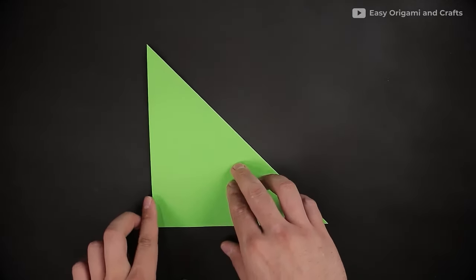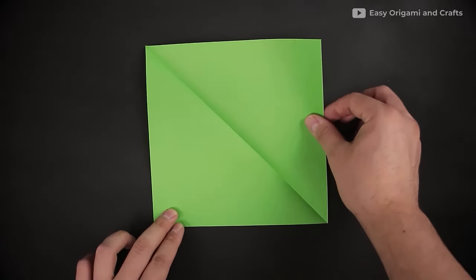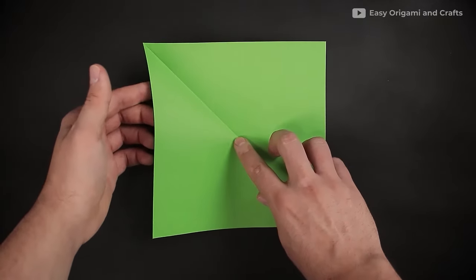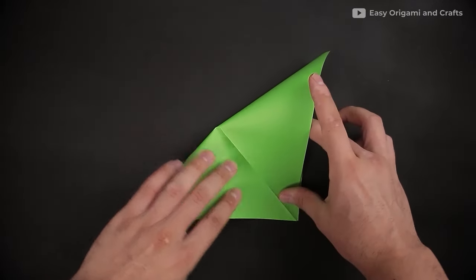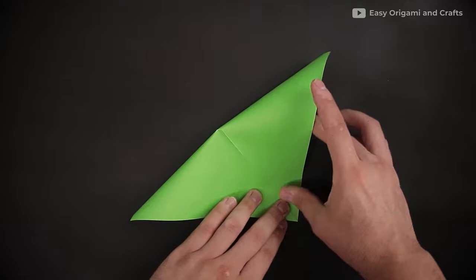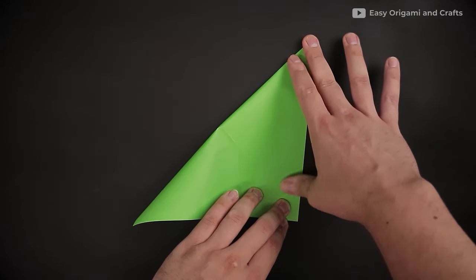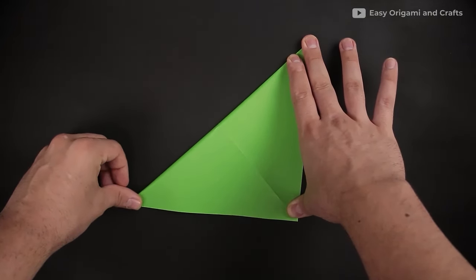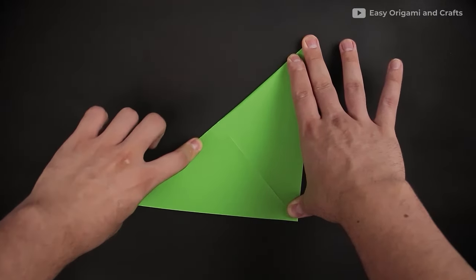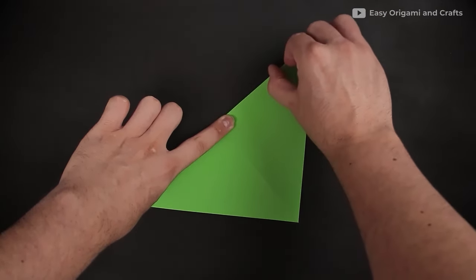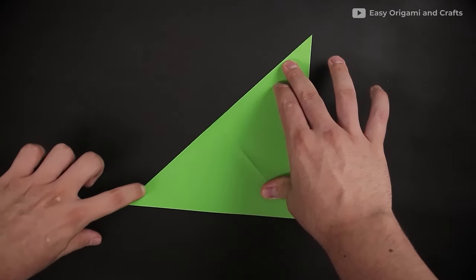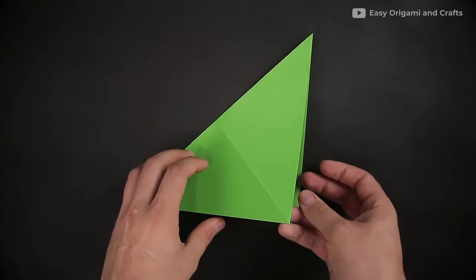Now we unfold and fold the opposite diagonal. Again, just bring the corners together and crease very well. Unfold again.